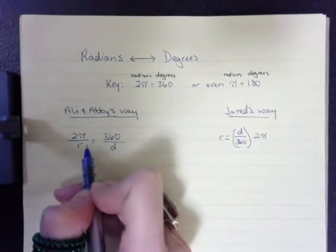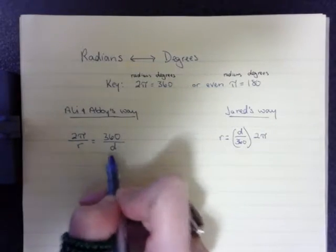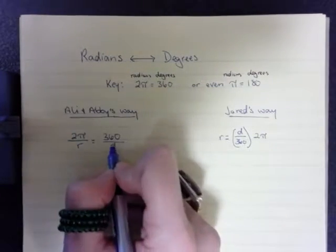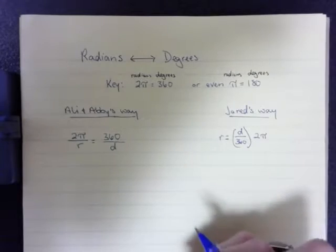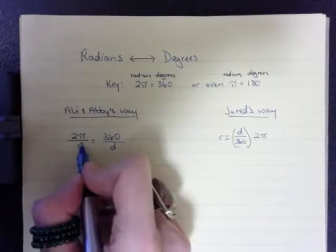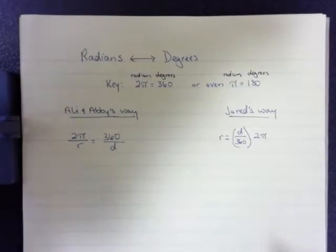r is when I have the radians, and d is when I have the degrees. So if I have the degrees, I can solve for the radians in terms of pi, and if I have the radians, I can solve for the degrees.